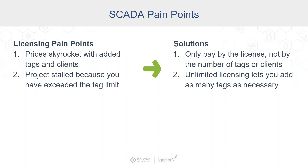Let's say you do your due diligence and have a good understanding of how many tags and clients are required for a project. Then something changes and suddenly you don't have enough tags or clients, and the price skyrockets to add more. Or in the case of tags, your entire project is stalled because you're out of tags. With Ignition, you only pay by the license, not by the number of tags or clients. The unlimited licensing lets you add as many tags as necessary — the only limitation is literally the size of your server.